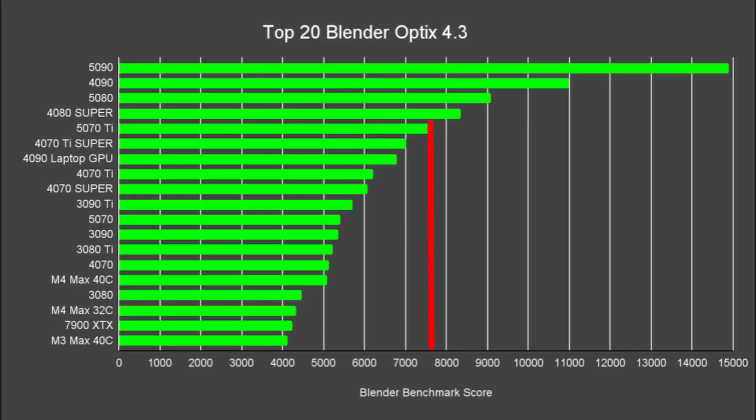You might have noticed there are missing cards on this list. The 4080 Super launched at around £200 less while delivering slightly better performance, making the standard 4080 rather redundant. I've also removed other similar cards like the 3090 and 3080 Ti — the 3090 is the only one that's there. There are no laptop cards on here, and professional cards are omitted.